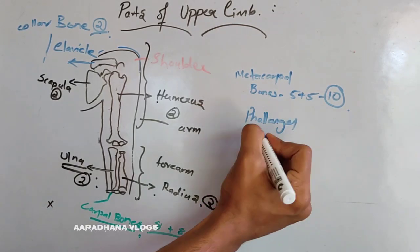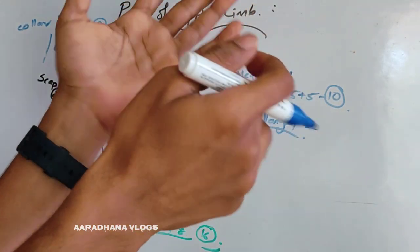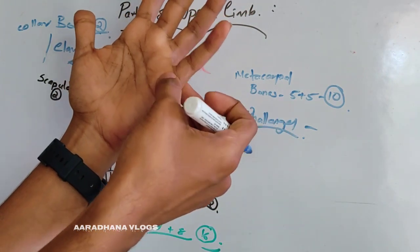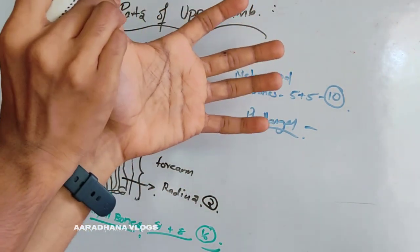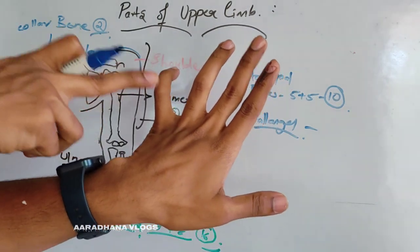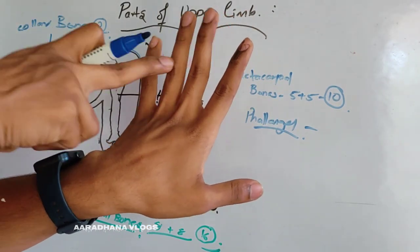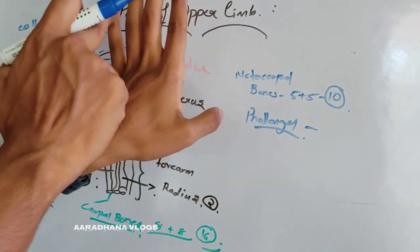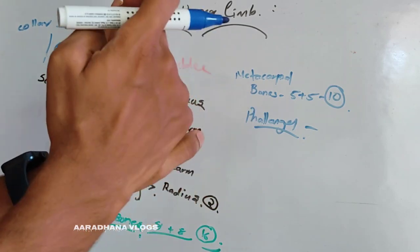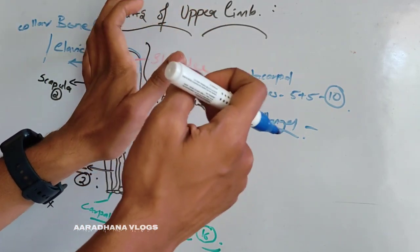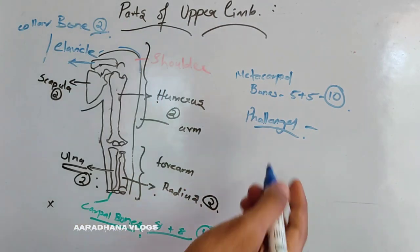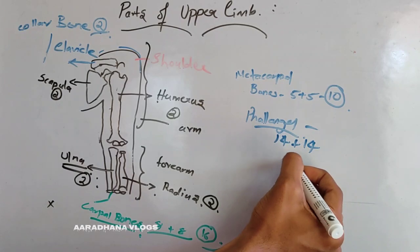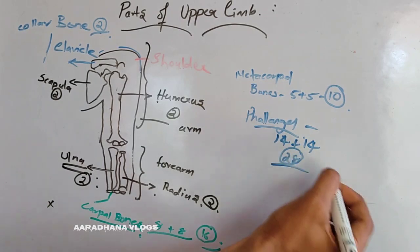The last bones are the phalanges. There are five metacarpals, and the phalanges are three on each finger except the thumb. So: three, six, nine, twelve — and then the thumb has only two, giving thirteen and fourteen. So there are 14 phalanges on each upper limb, and a total of 28 phalanges in the human body.